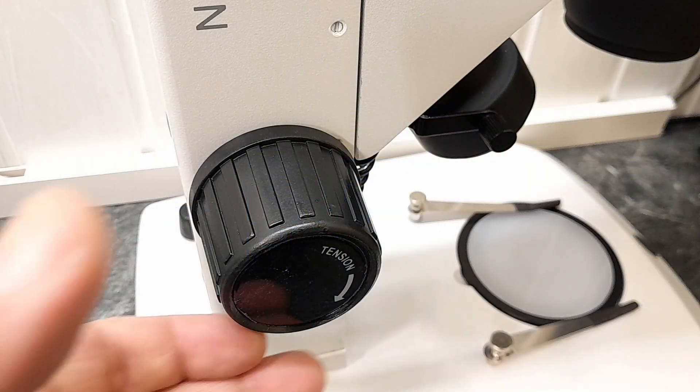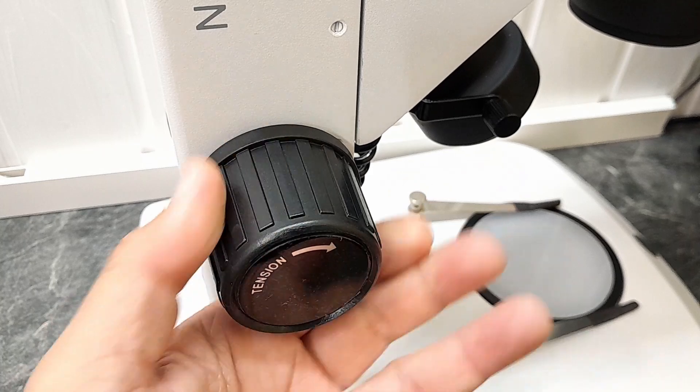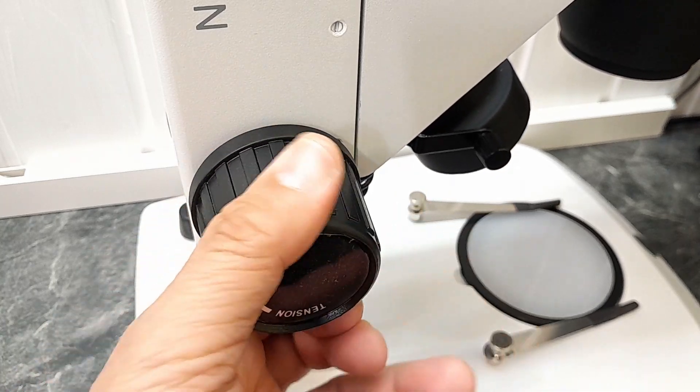This microscope has a rack and pinion stand as I already mentioned and turning the focusing knobs raises and lowers the microscope head. By turning the focusing knobs in opposite directions however, you can change the tension to make it easier or more difficult to turn the focus knob.